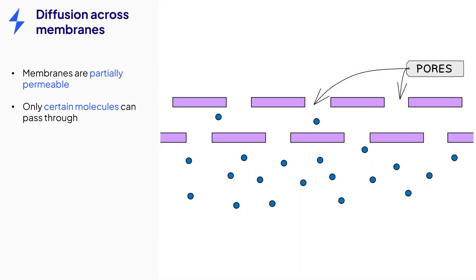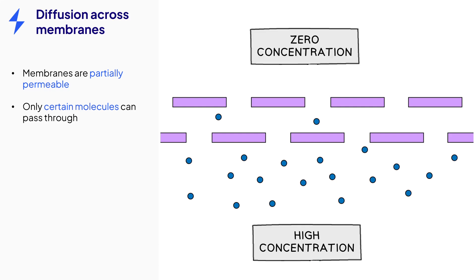The membranes have pores within them and some molecules such as water or glucose are small enough to fit through the pores. Note how the molecules are at high concentration below the membranes and zero concentration above.